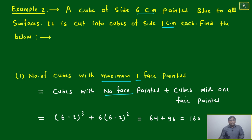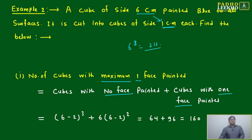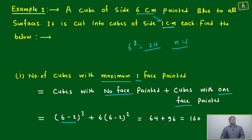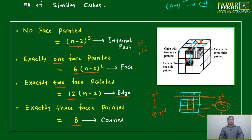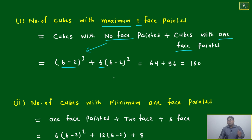Maximum one face painted means cubes with no face painted plus cubes with one face painted. Here the cube side is 6, converted to 1 cm units giving 216 total cubes, so n = 6. No face painted is given by (n−2)³ = (6−2)³. One face painted uses 6 faces, each contributing (n−2)² cubes.